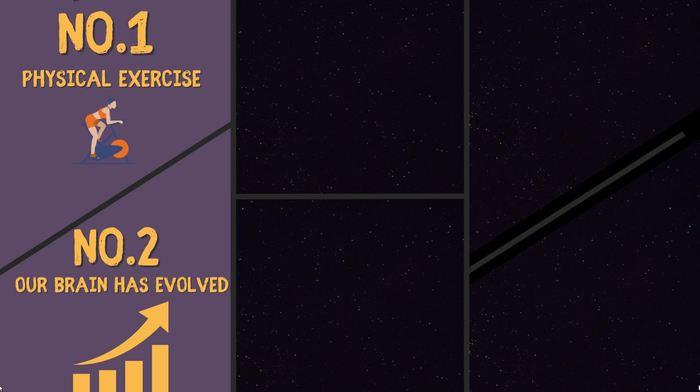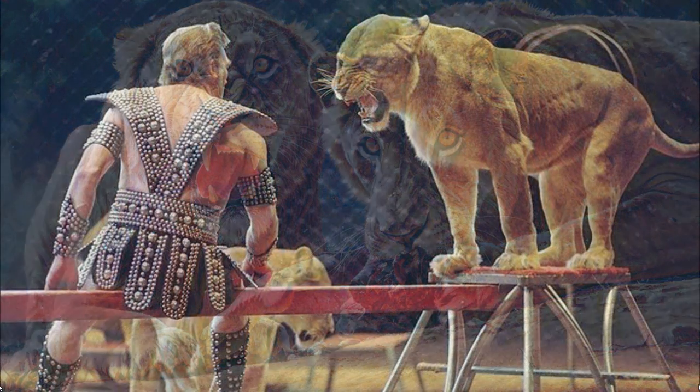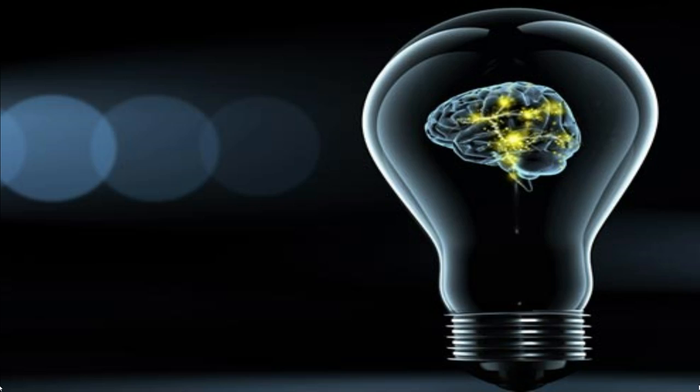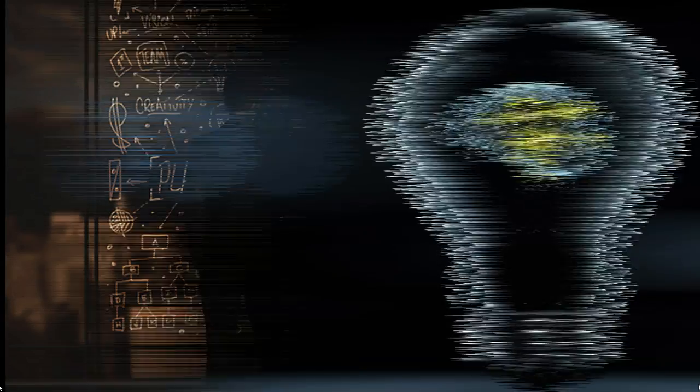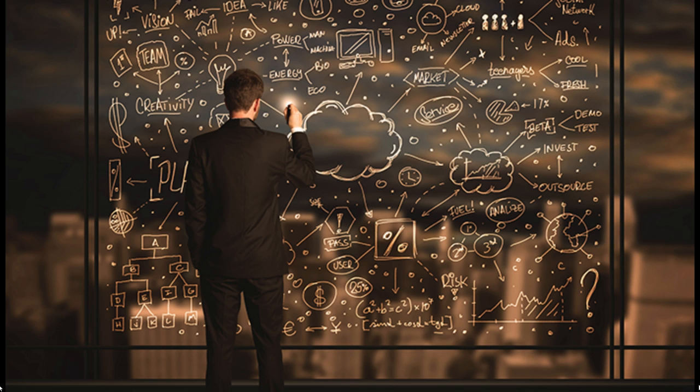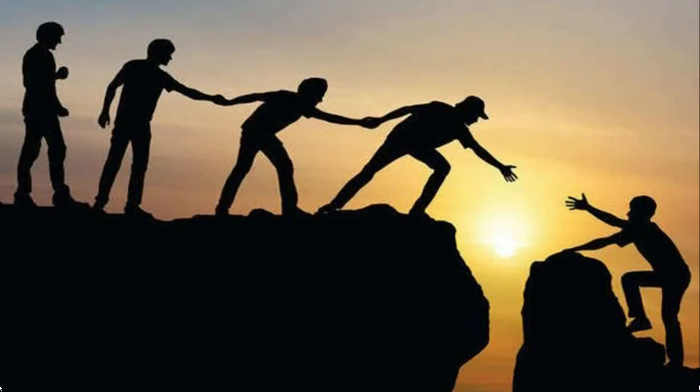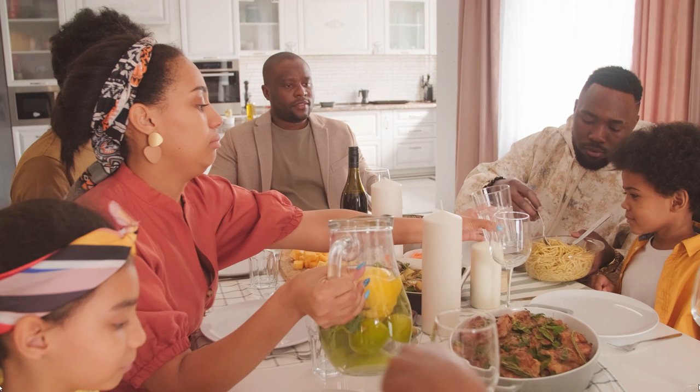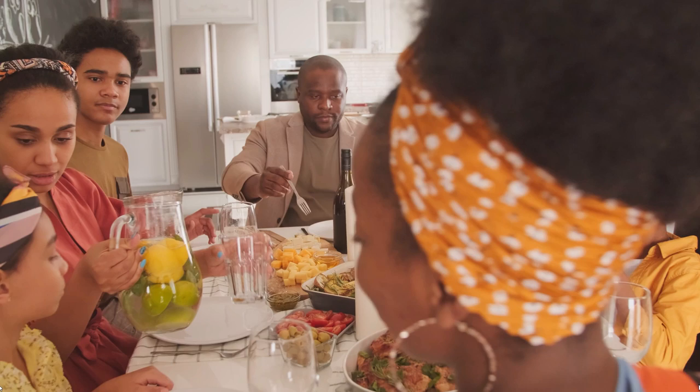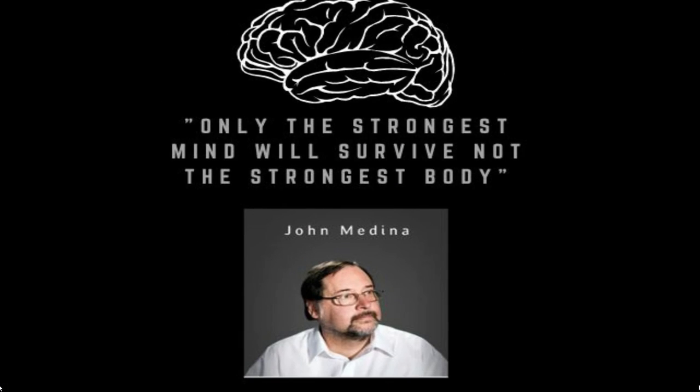Rule number two: Our brain has evolved for survival. We all agree that man is not more powerful than animal, but man is more powerful in terms of thinking and planning. As the brain stores knowledge, we start to improvise that knowledge. Our database enables us to become aware of our mistakes and we are able to create new knowledge as a result. It is only possible because of human cooperation. Humans can't do everything by themselves; they need family and society's help. John says only the strongest mind will survive, not the strongest body. So for the better evolution of the brain, start cooperating with humans by understanding their needs, strengths and weaknesses.